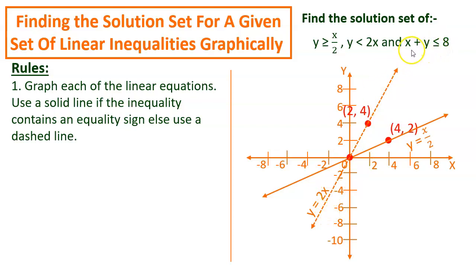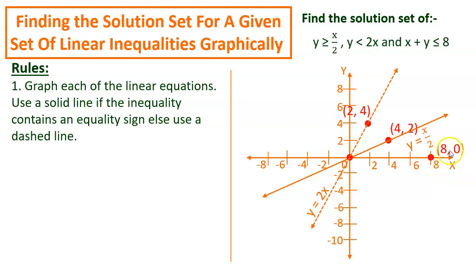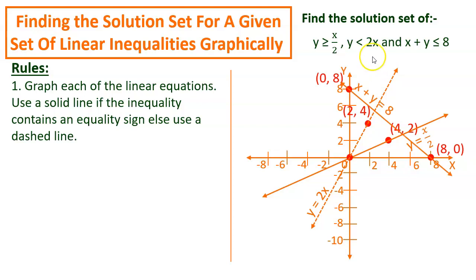Finally, we come to the equation x plus y equal to 8, and it will be a solid line because of the equal to sign. But this time we cannot take the origin as one of the points because 0 plus 0 is not equal to 8. So we take two separate points: (8, 0), because 8 plus 0 equals 8, and (0, 8), because 0 plus 8 also equals 8. You may take other sets of points for each of these three lines. I connect these two points and this is again a solid line.